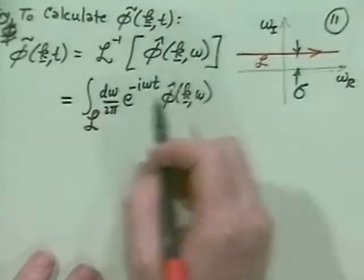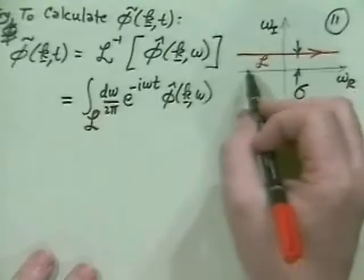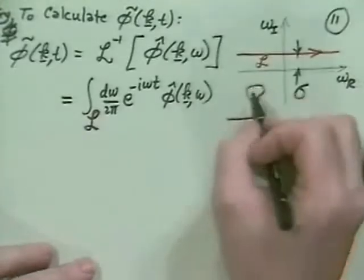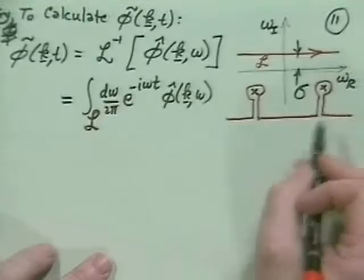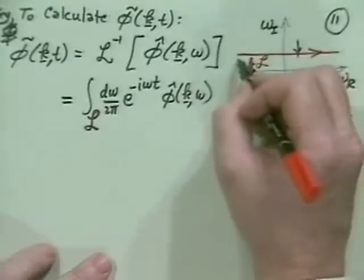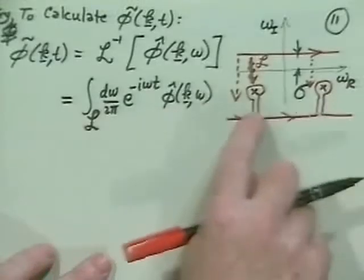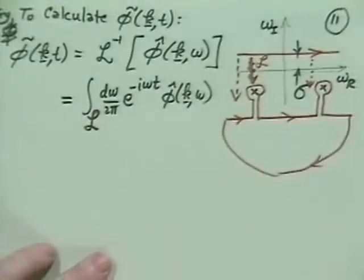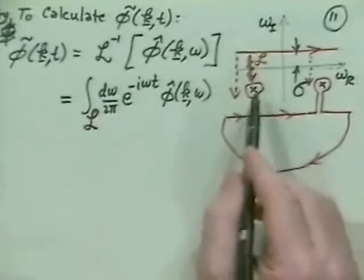What you have to do is deform the contour downward. As you deform it downward, you might find poles, and you have to deform the contour so as not to cross those poles. So what you do is analytically continue the contour downward — every time you run into a pole in φ̂, you deform the contour around that pole and then finally close in the lower half plane.